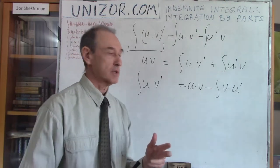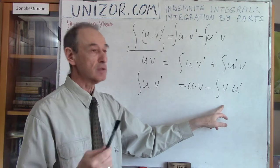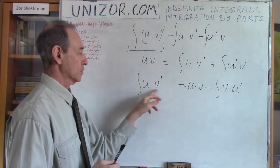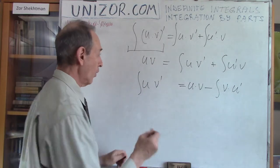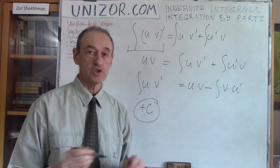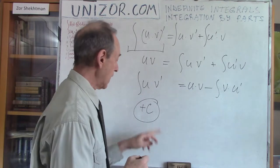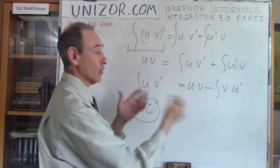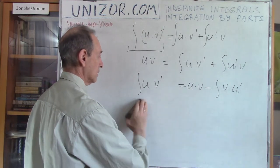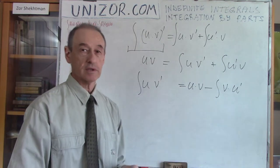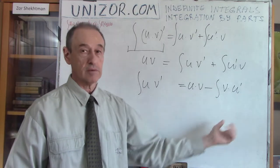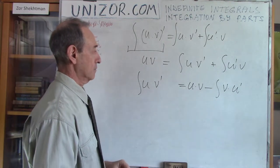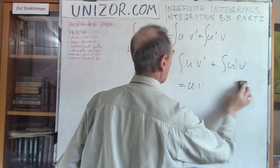A brief comment: whenever you write an integral, you're not talking about a single function but a family of functions, all differing from each other by a constant. If you add a constant to any function, the derivative is exactly the same. That's why plus C is implied — I don't write it down unless in the very last expression for the final answer.